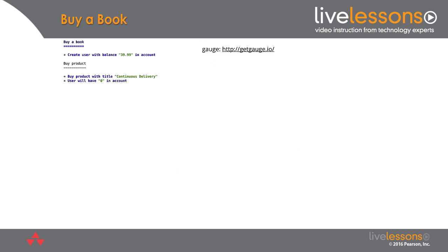And so what Gauge lets you do is you run the command on the command line and it executes these specifications. So what you can see here on screen is a specification for buying a book. There's an initial step which sets up a user with a balance of $39.99 in their account. And then I have a scenario which is to buy a product. We're going to buy the continuous delivery book and make sure we only have $0 left in our account.